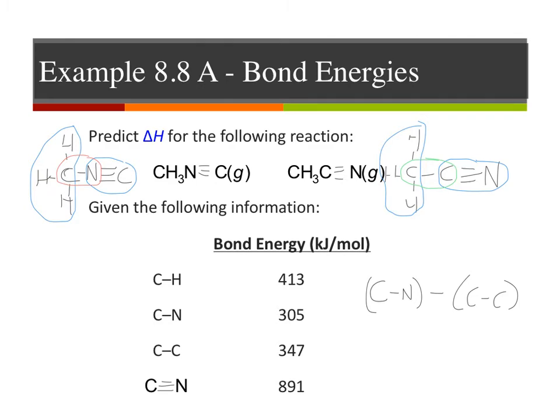My carbon-nitrogen single bond is 305 minus my carbon-carbon bond, 347. That's going to be my delta H value, negative 42 kilojoules. Negative 42 kilojoules for this reaction.